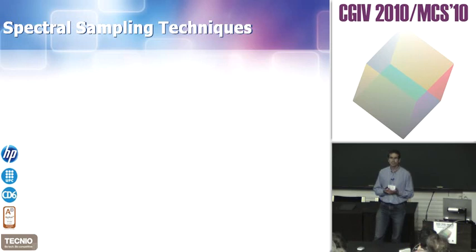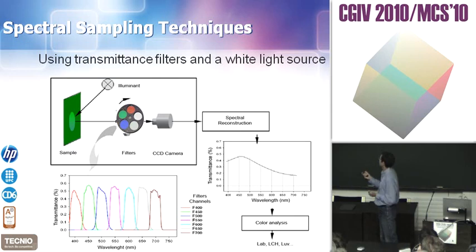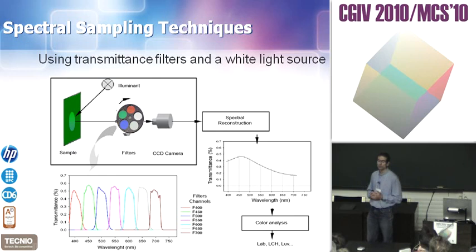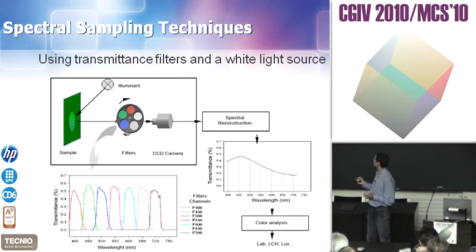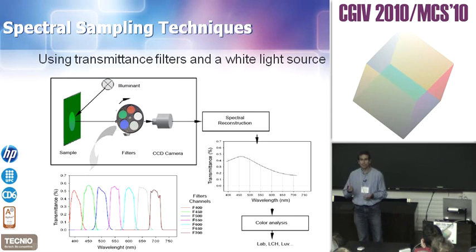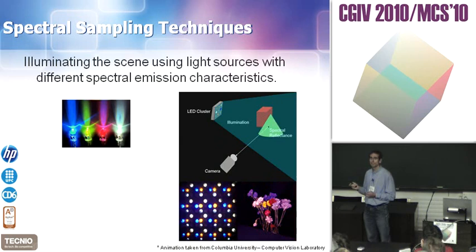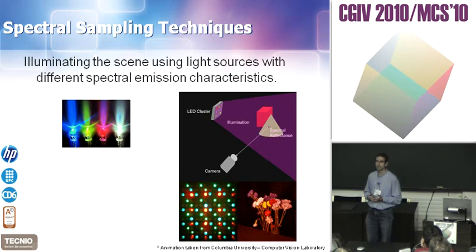Which are the spectral sampling techniques that we can find? First, we find a technique where you illuminate the image with a white light source — by white we mean a uniform enough light source with uniform spectrum — and then we use narrowband filters with different channels. We do a spectral reconstruction and get the full spectrum of the image for every pixel the camera can capture. Another way is by using different light sources with different spectra to illuminate the image, which is another way of sampling or filtering the image by different spectra.